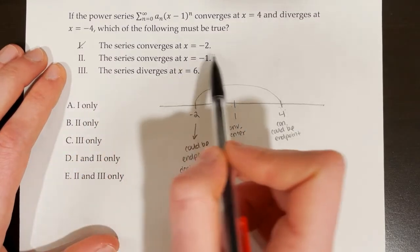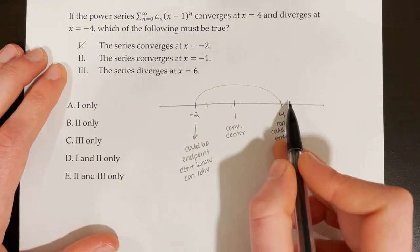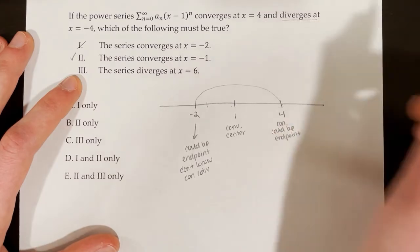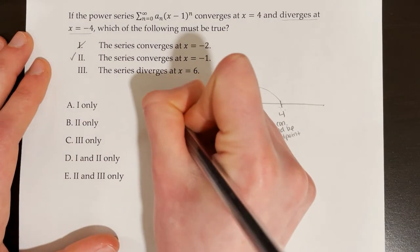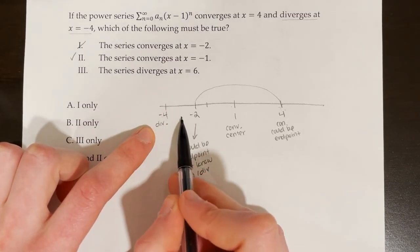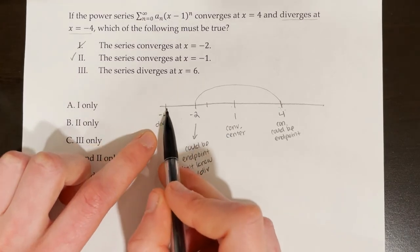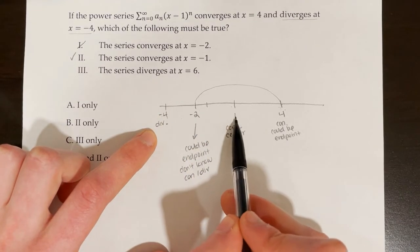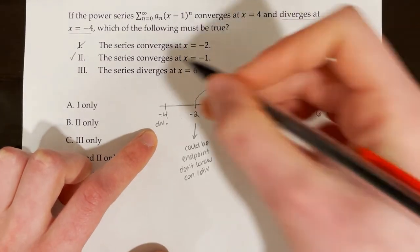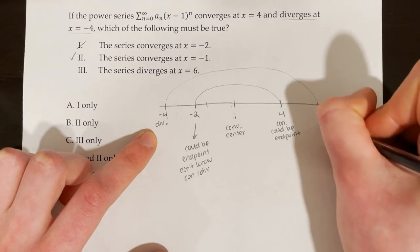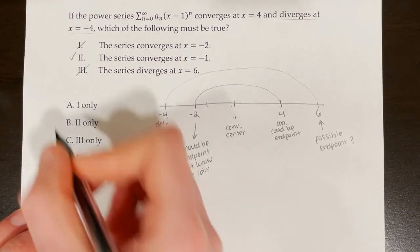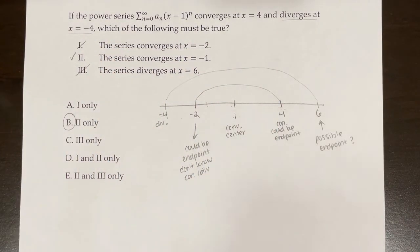Statement 2 says the series converges at x equals negative 1. Since negative 1 is definitely within the convergence window between negative 2 and 4, this is true. Statement 3 says the series diverges at x equals 6. The series diverges at x equals negative 4, meaning the endpoint is between negative 2 and negative 4, possibly at negative 4 itself. The symmetric point would be at x equals 6. But at endpoints, we don't know convergence or divergence without testing. Therefore, we cannot confirm the series diverges at x equals 6. Only statement 2 is necessarily true, so choice B is correct.